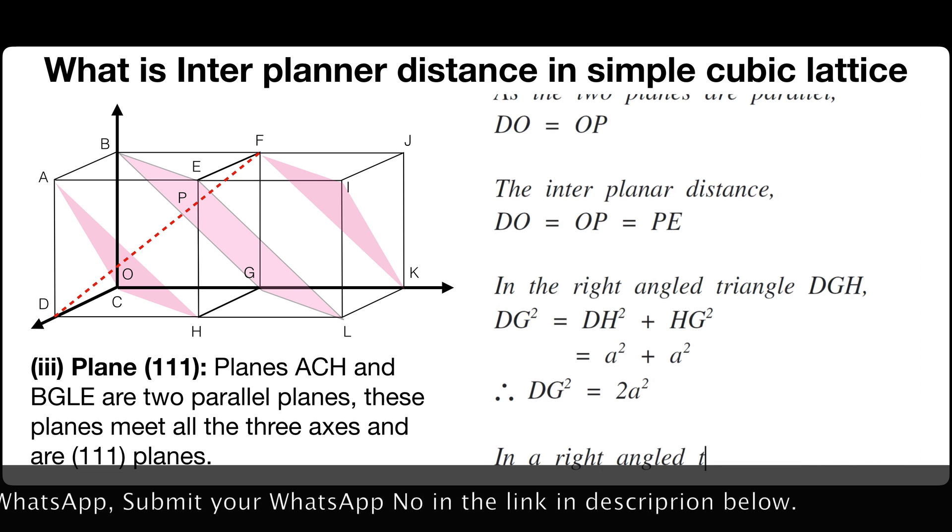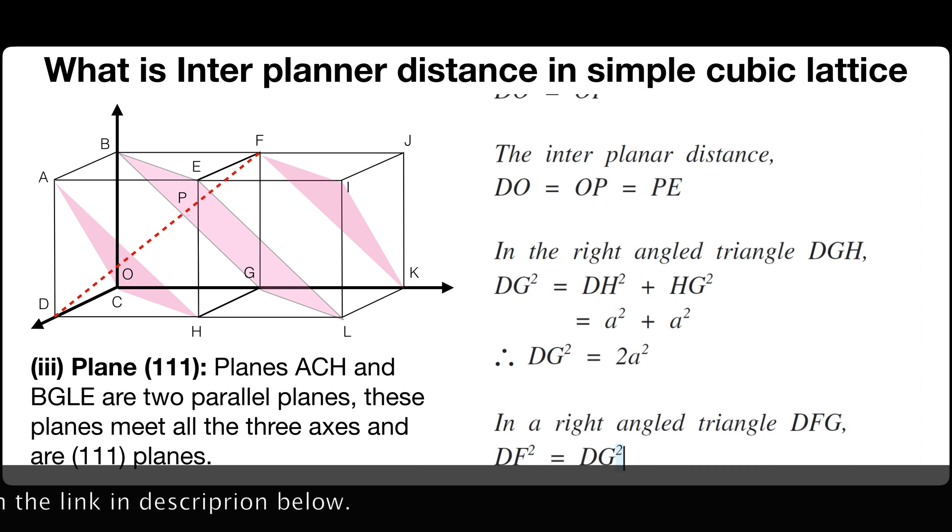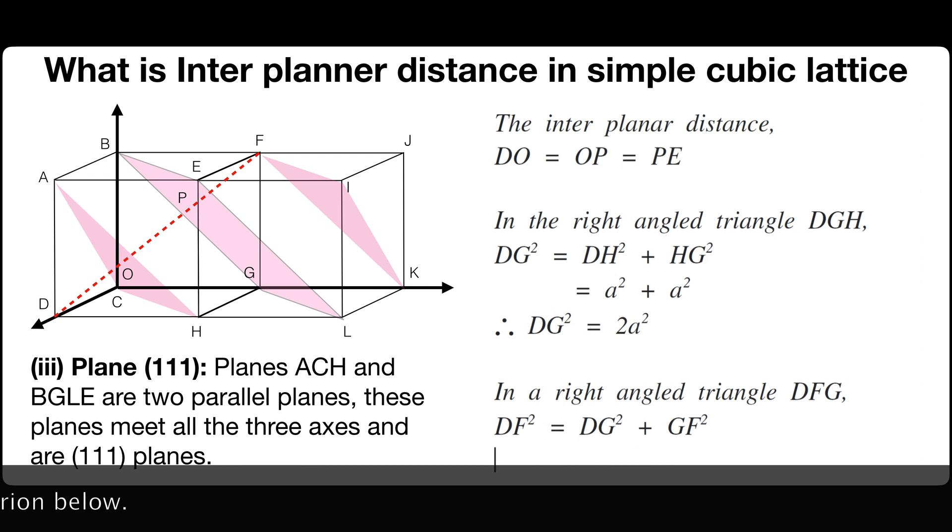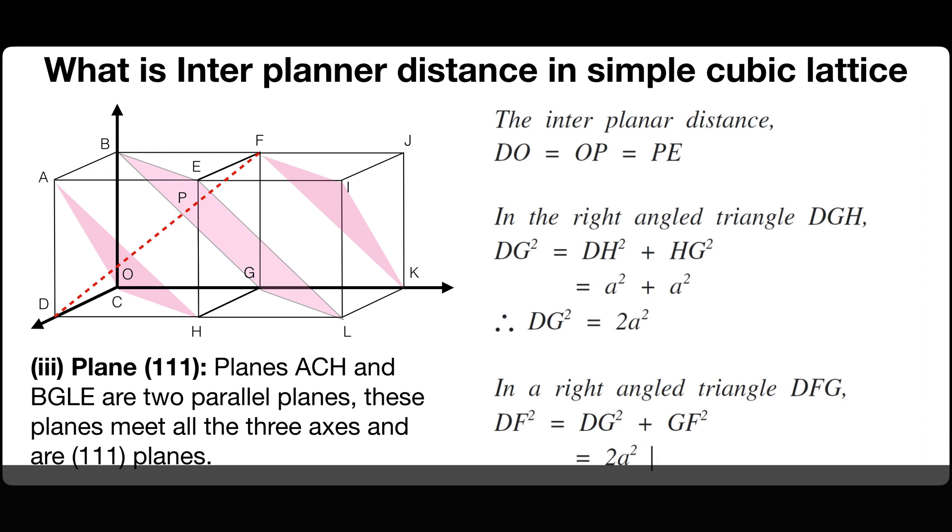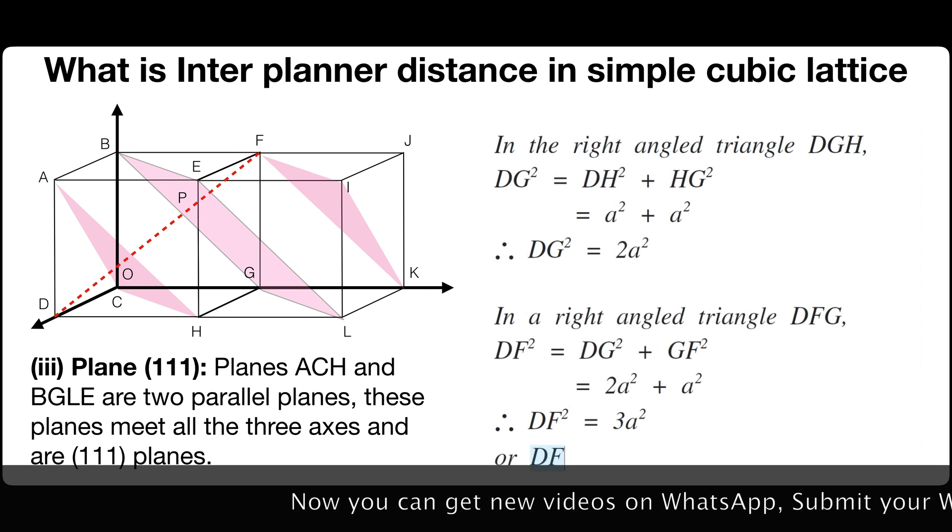In a right angle triangle DFG, DF square is equals to DG square plus GF square which is equals to 2A square plus A square. Therefore, DF square is equals to 3A square or DF is equals to A square root of 3.